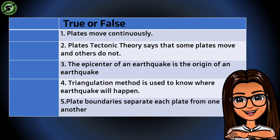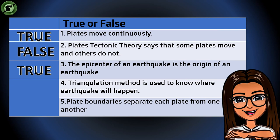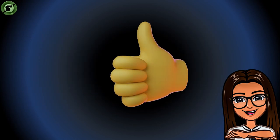Let's check your answers. Number one — Plates move continuously: TRUE. Number two — Plate tectonic theory says that some plates move and others do not: FALSE. Number three — The epicenter of an earthquake is the origin of an earthquake: TRUE. Number four — Triangulation method is used to know where an earthquake will happen: FALSE. Number five — Plate boundaries separate each plate from one another: TRUE. Did you answer the items correctly? Congratulations — I know you did well!